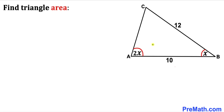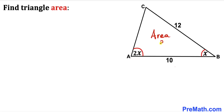Welcome to pre-math. In this video we have got a scalene triangle ABC such that its side length AB is 10 units, its side length BC is 12 units, this angle ABC is X, and this angle BAC is 2 times X. Our task is to calculate the area of this triangle ABC.